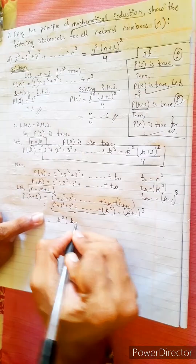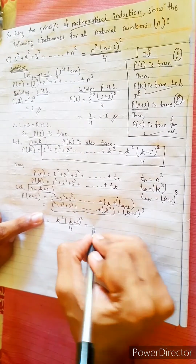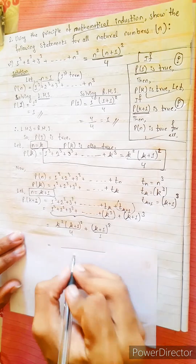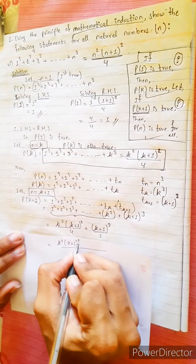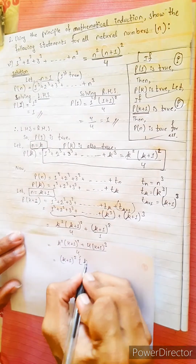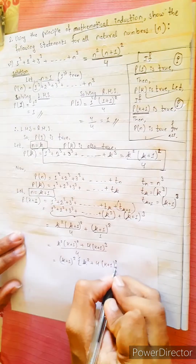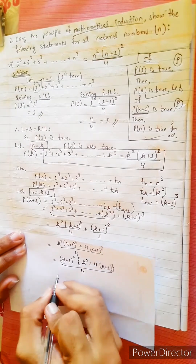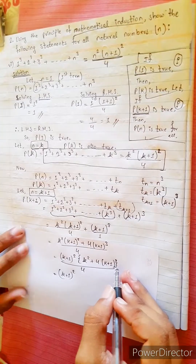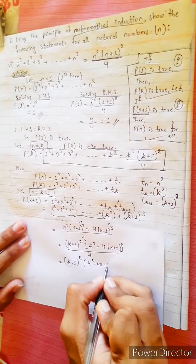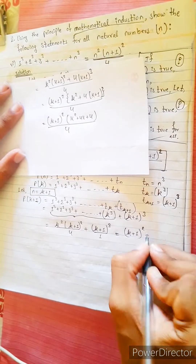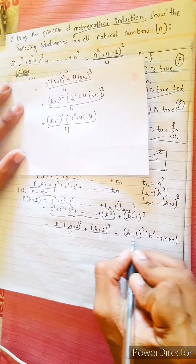Equals to k squared (k+1) whole squared divided by 4 plus (k+1) whole cubed. Then k squared (k+1) squared plus 4 times (k+1) cubed. Common factor is (k+1) squared, remaining term: k squared plus 4 times (k+1), divided by 4.